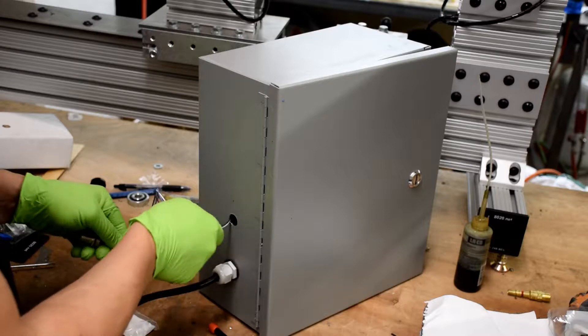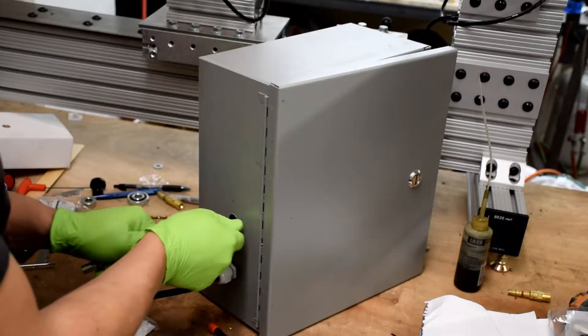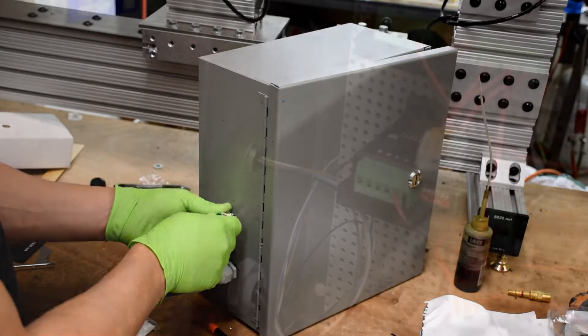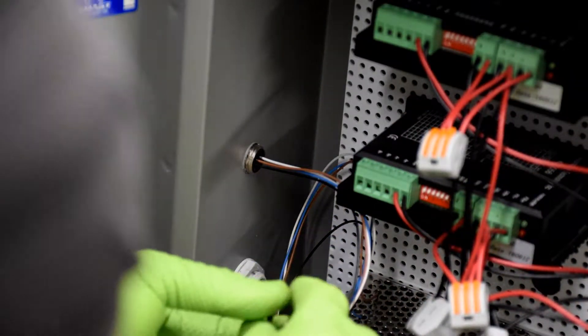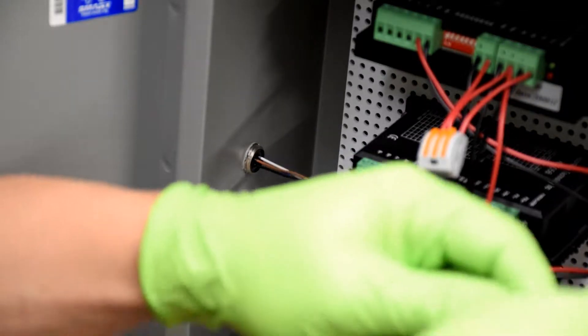Just take those wires and thread them right through that hole you made. We'll attach the bulkhead connector to the enclosure with the little nut that came with it.